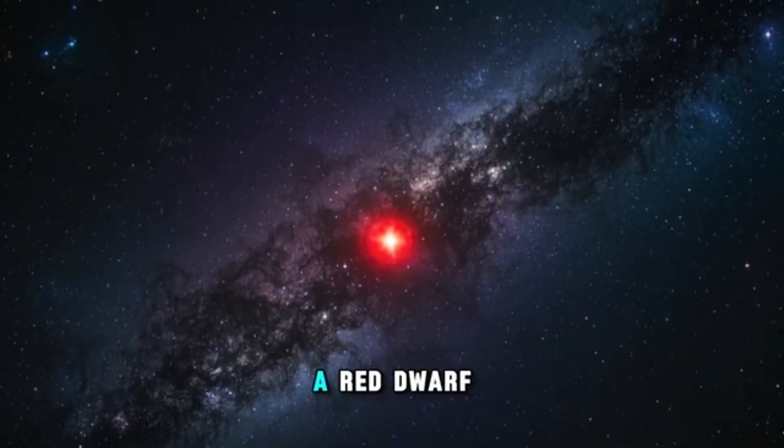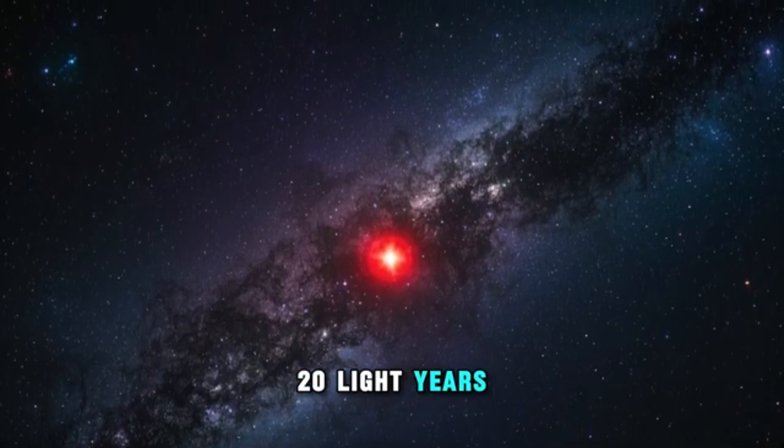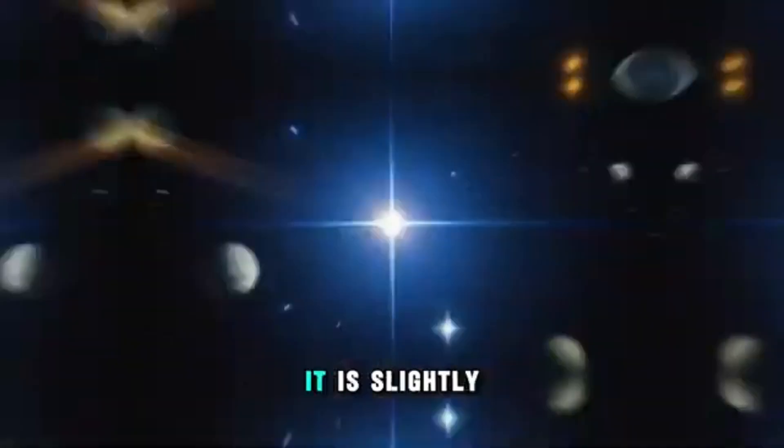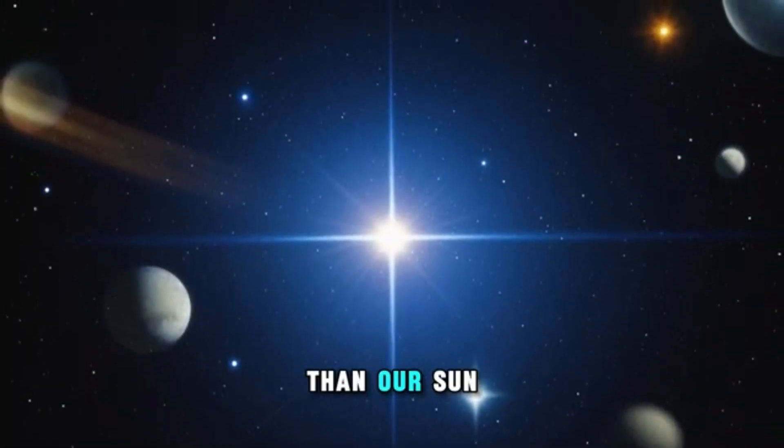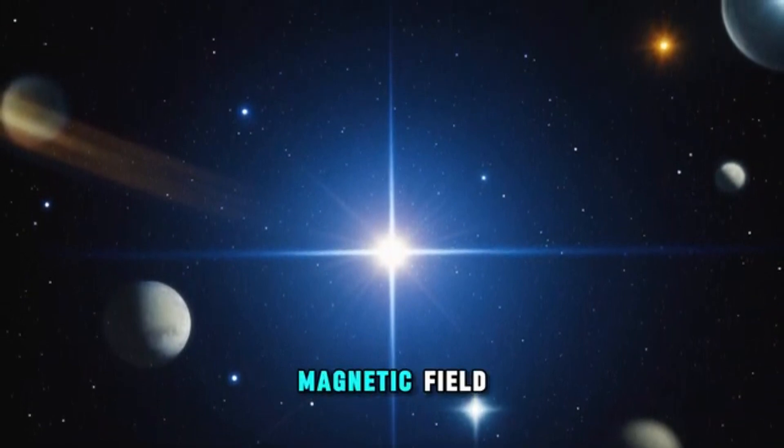Gliese 581 is a red dwarf star located approximately 20 light-years away in the constellation of Libra. It is slightly smaller and cooler than our sun, but it has a very strong magnetic field.